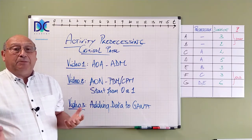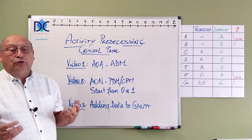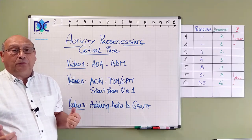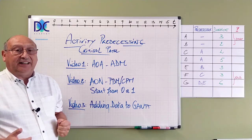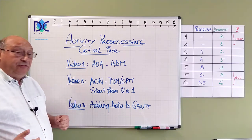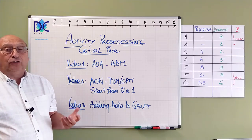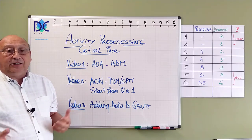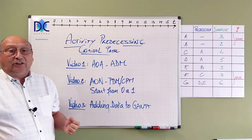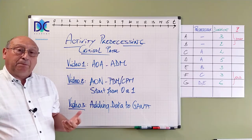Although the PMI has chosen to use the activity on the node methods for precedence diagramming. And that will be in video two. There I will explain the activity on the node method. Basically the precedence diagramming method. Together with the calculation of the critical path.